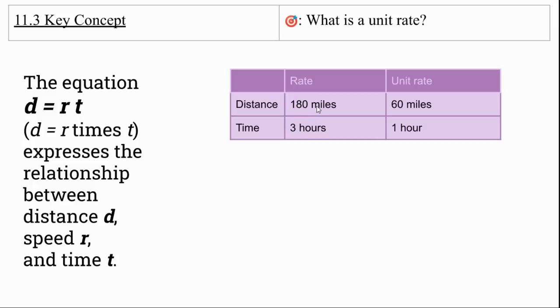I gave you an example. So here's a distance which is 180 miles for three hours. An equivalent ratio to that is going to be 60 miles per hour because three divided by three is one and 180 divided by three is 60.